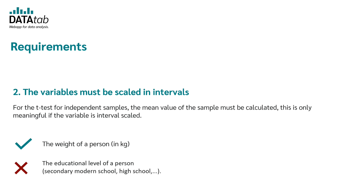The second requirement is that the variables must be interval scaled. For the t-test for independent samples, the mean value of the sample must be calculated, and this is only meaningful if the variable is interval scaled — for example, the weight of a person. Not valid would be the educational level of a person, such as secondary school, modern school, higher school, and so on.